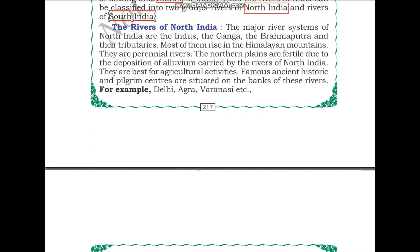Let us start with the rivers of North India. The major river systems of North India are the Indus, Ganga, and Brahmaputra, and their tributaries. Most of them rise in the Himalayan mountains.